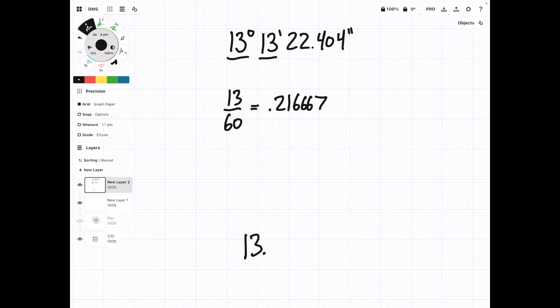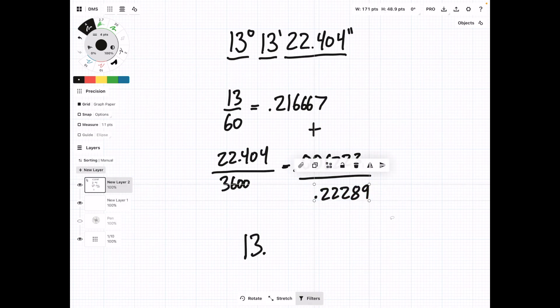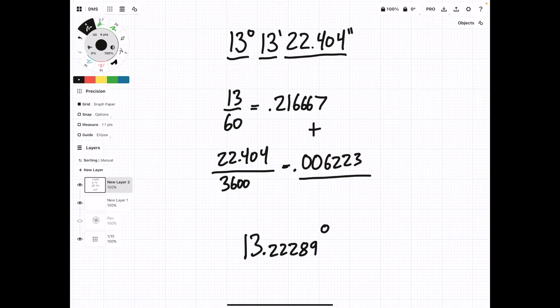And then we're going to take the seconds part, 22.404, and divide that by 3,600, since there are 3,600 seconds in a degree. And this is going to give us 0.006223. Then, we add them up. And this gives us 0.22289. And what we can do is just take this, slide it down into our answer. So, final answer is 13.22289 degrees.